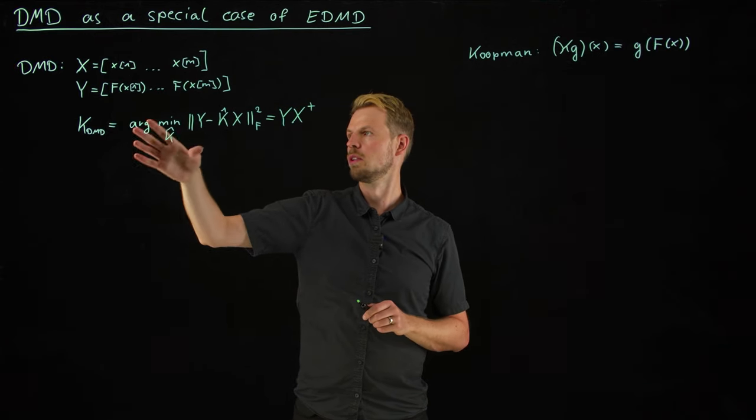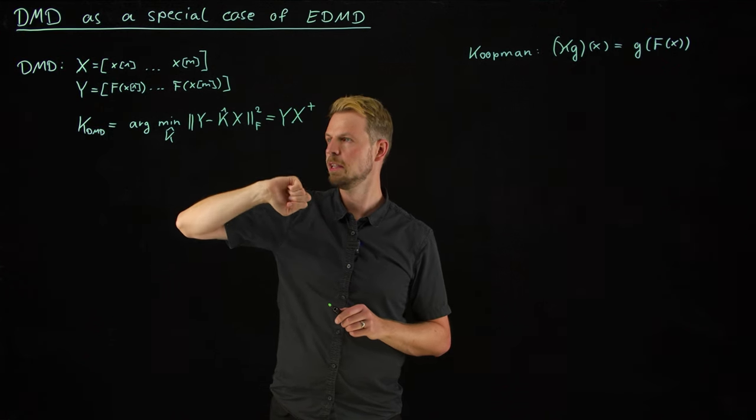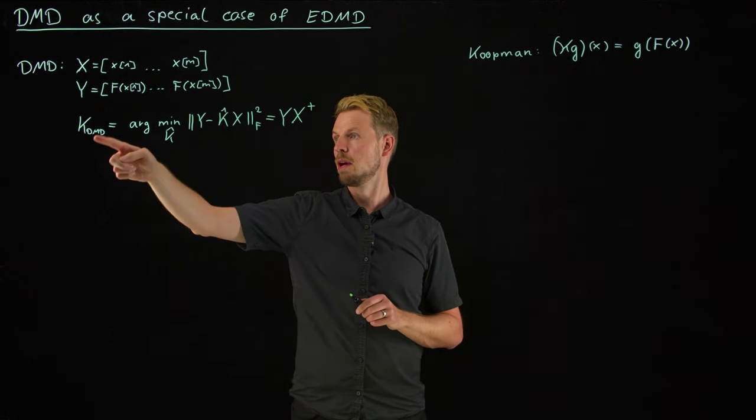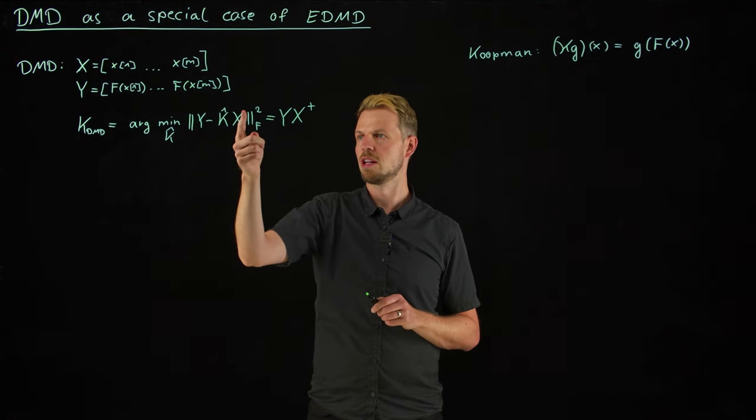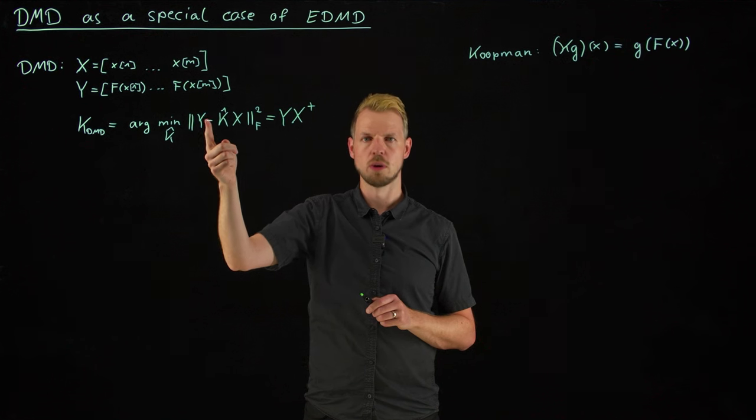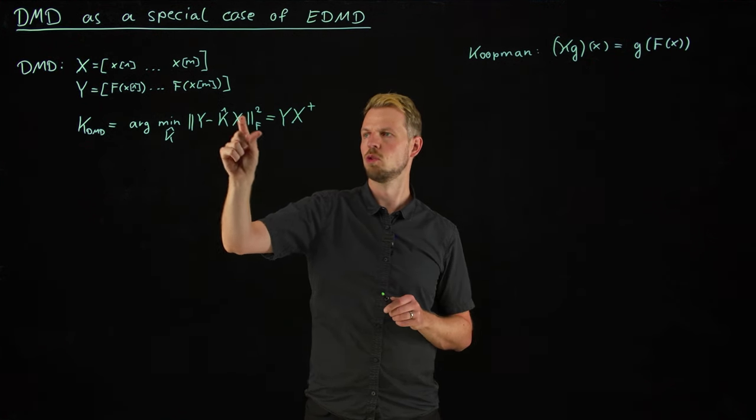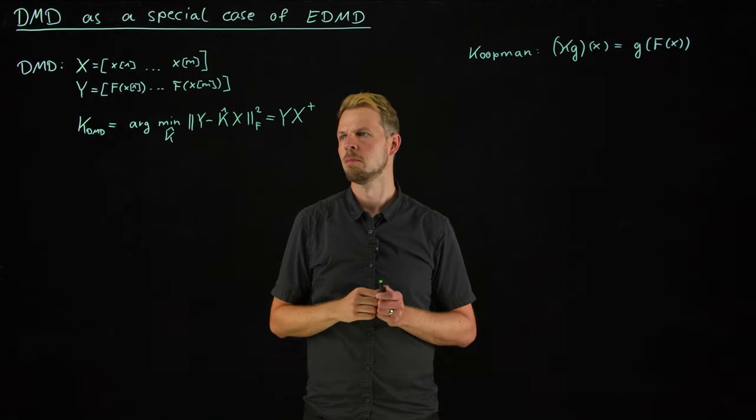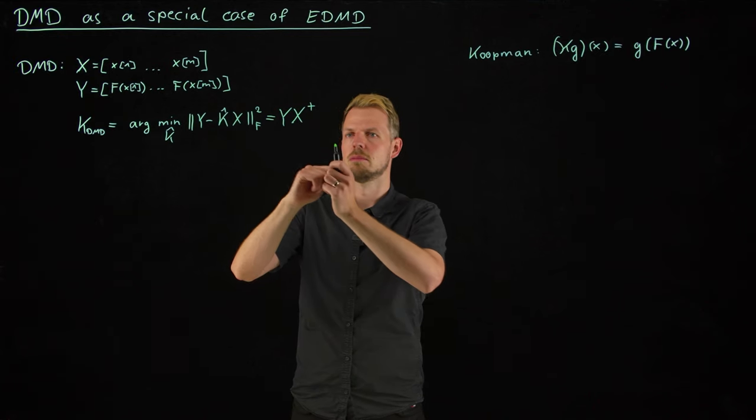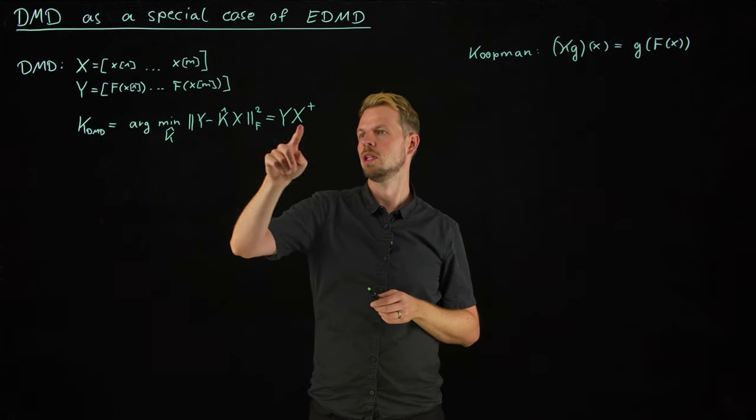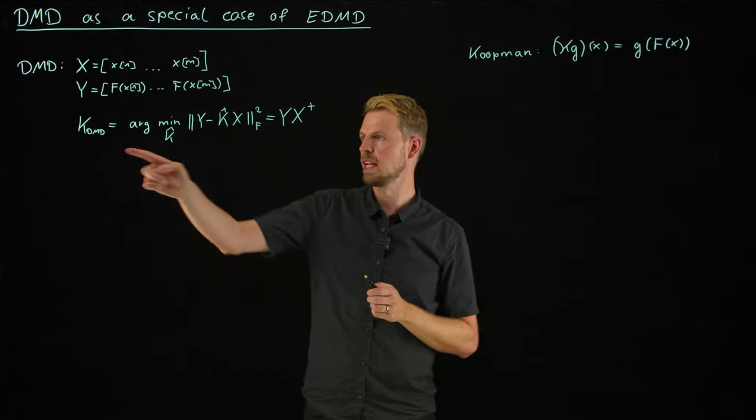And the DMD matrix which I'm going to denote by K_DMD is simply the matrix that minimizes this loss function. So the best fit matrix that maps every column of x to the column of y, least squares error, which is the matrix that maps x to y with minimal error. And we all know this can be solved by the pseudo inverse. You multiply from the right by the pseudo inverse and this gives you K_DMD.